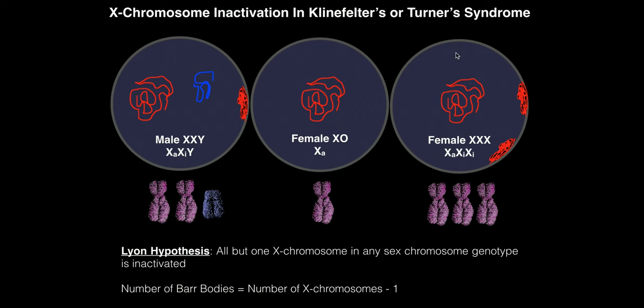Jacob syndrome has genotype XYY — two Y chromosomes. Notably, extra Y chromosomes are not inactivated. So even if someone had three Y chromosomes, all three would remain active. There are no bar bodies produced for extra Y chromosomes.